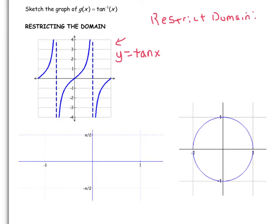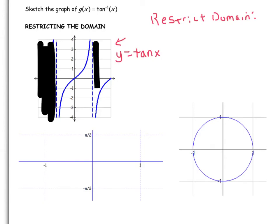So we'll restrict the domain to make it pass the horizontal line test. And again, there's many options, but we're going to use what the math community used, which was to get rid of everything to the left of negative π/2, and everything to the right of positive π/2.